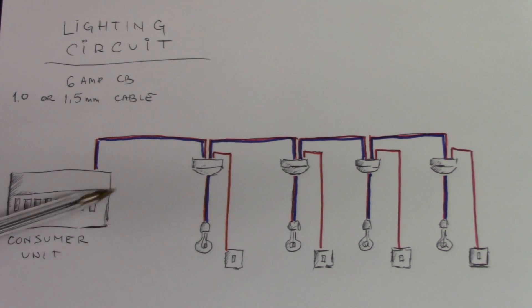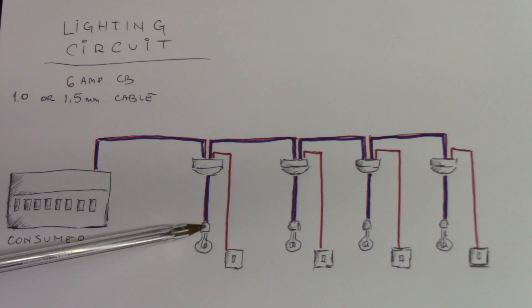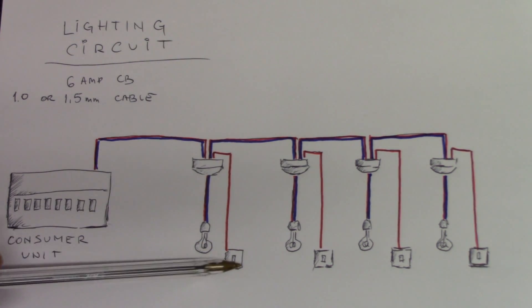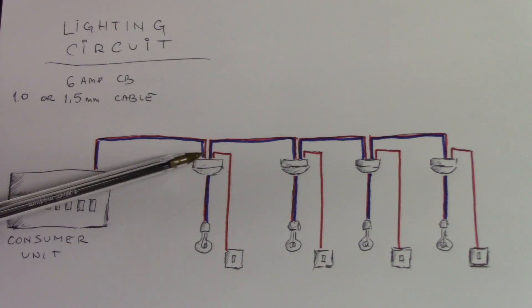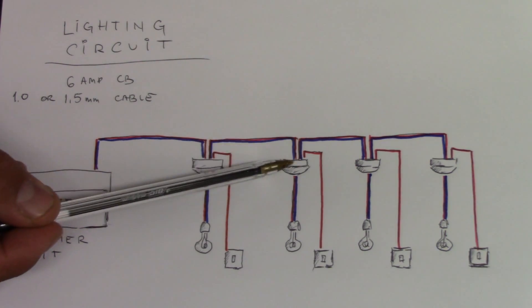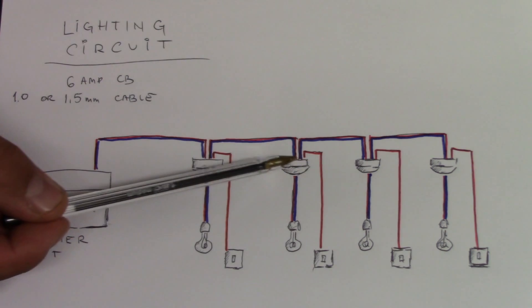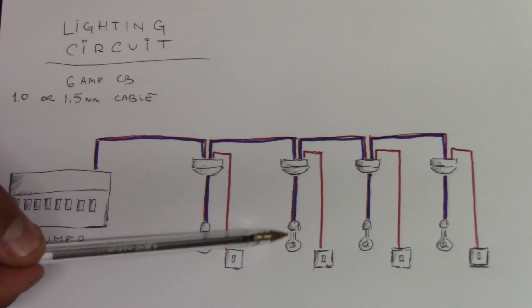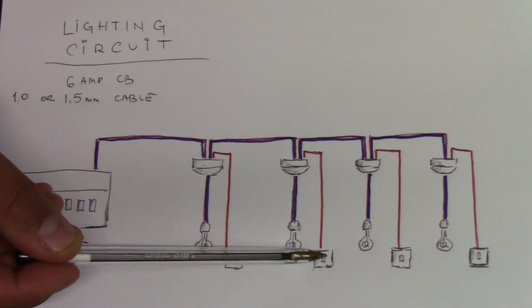This is the radial lighting circuit. It starts from the consumer unit, then from the consumer it goes to the first room where you've got ceiling rose with the pendant and the bulb at the end, and also a one-way switch. Let's say this is in one room, then from this room it goes to another room. The situation is the same, so connection in the ceiling rose, pendant and the light bulb, and the switch one-way switch.